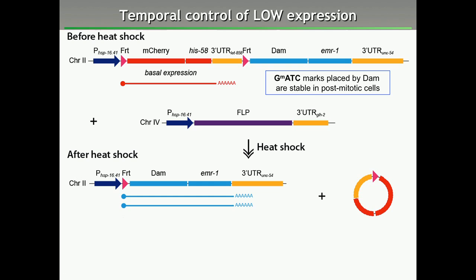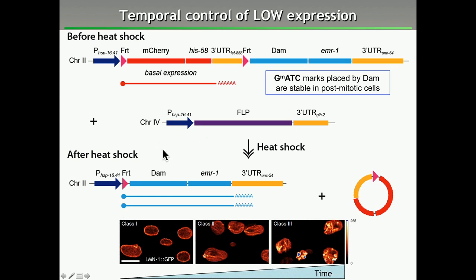Connecting with the previous talk, this approach could potentially be combined with light-induced heat activation in particular cell types. The reason we want temporal control is that C. elegans is a powerful model for studying aging, and nuclear morphology changes dramatically during aging — as shown in images of cells expressing Lamin-GFP. But we don't really know how these changes in nuclear envelope morphology impact on nuclear organization, and that is what we would like to address.